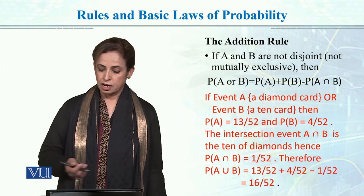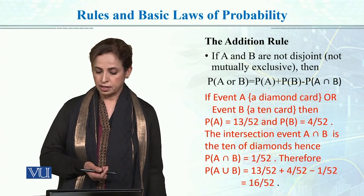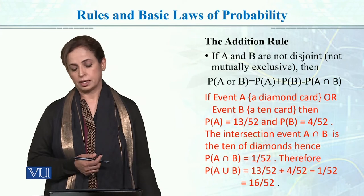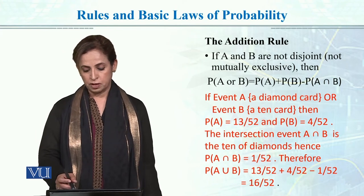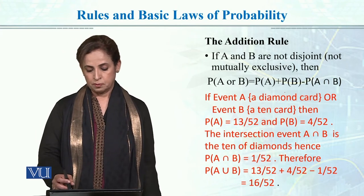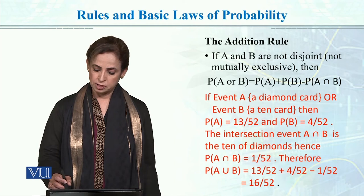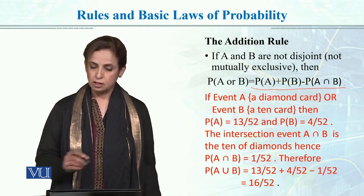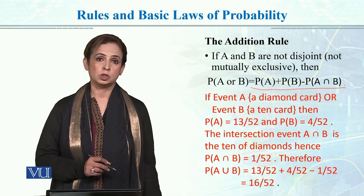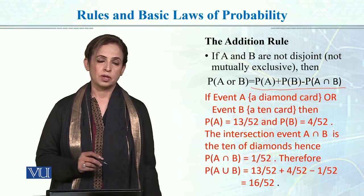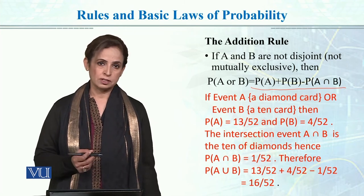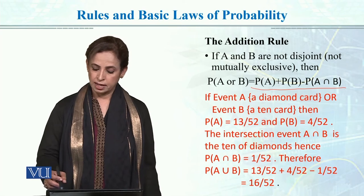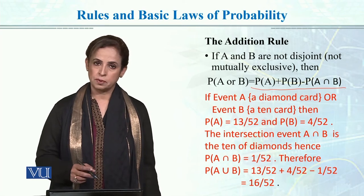If A and B are not disjoint and not mutually exclusive, then the probability of A or B equals the probability of A plus the probability of B, minus the joint probability — the intersection. We subtract the intersection because that overlapping portion would otherwise be counted twice.